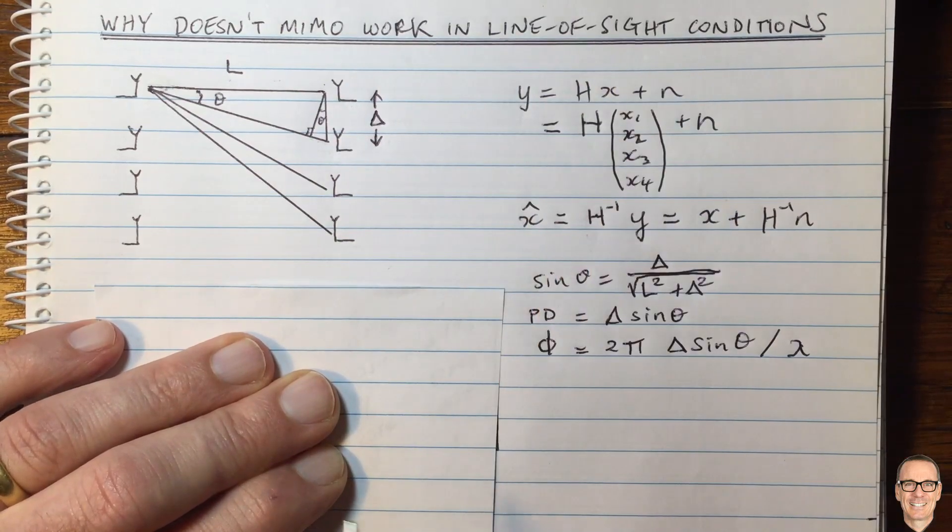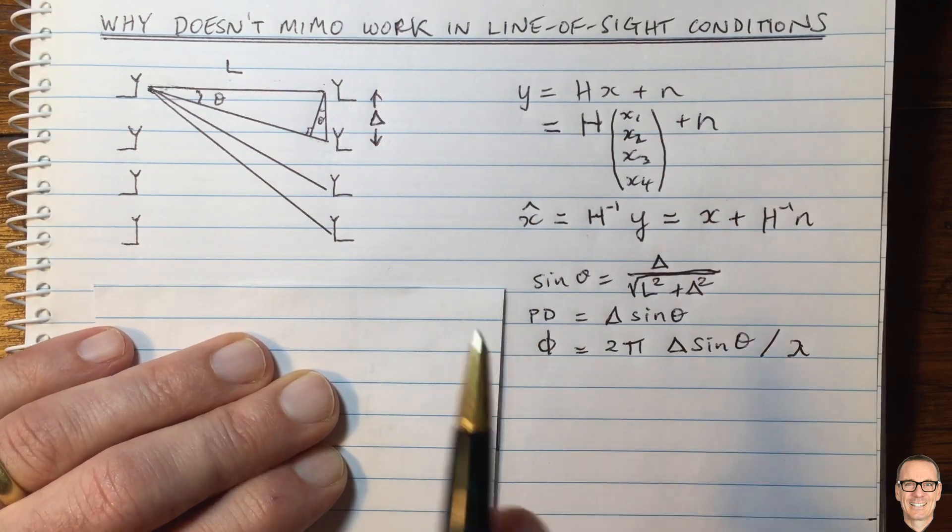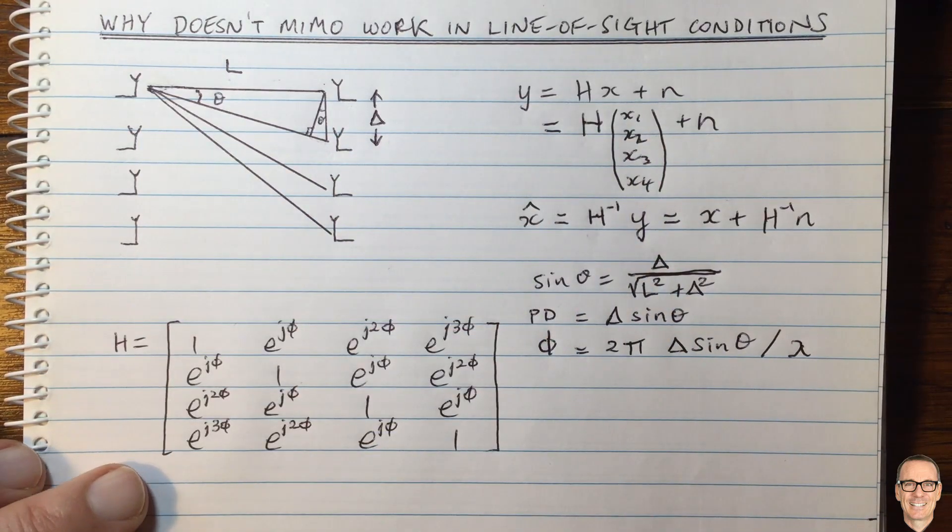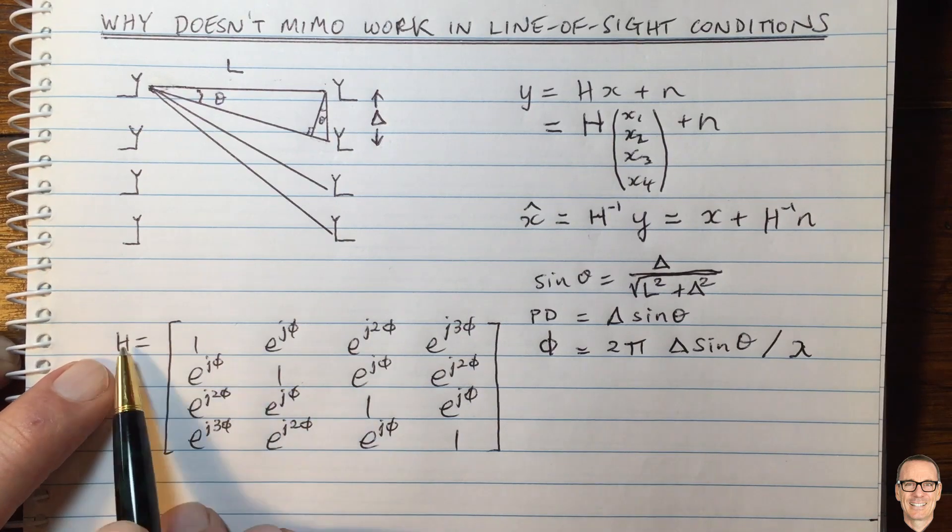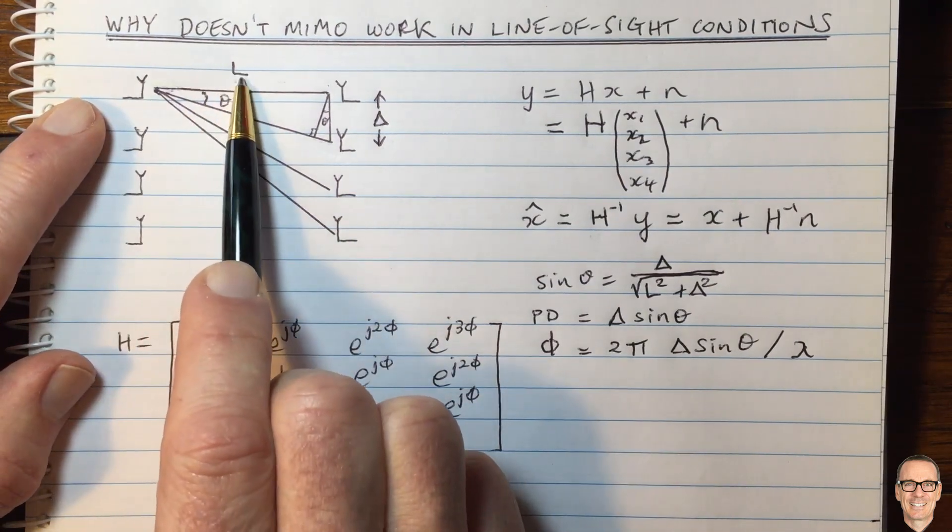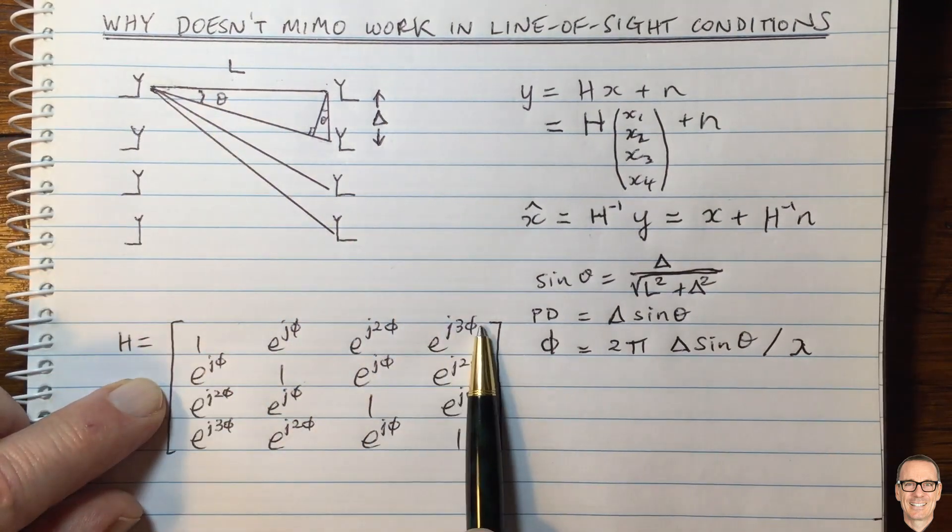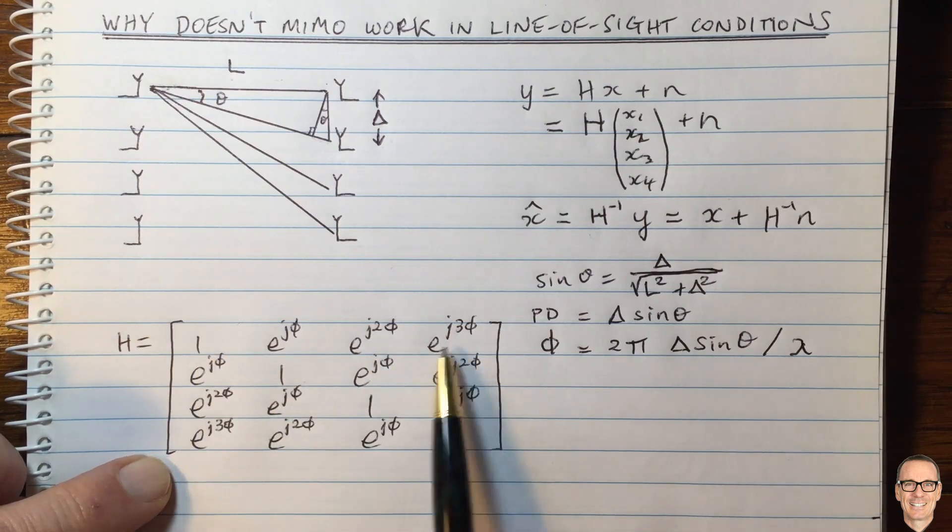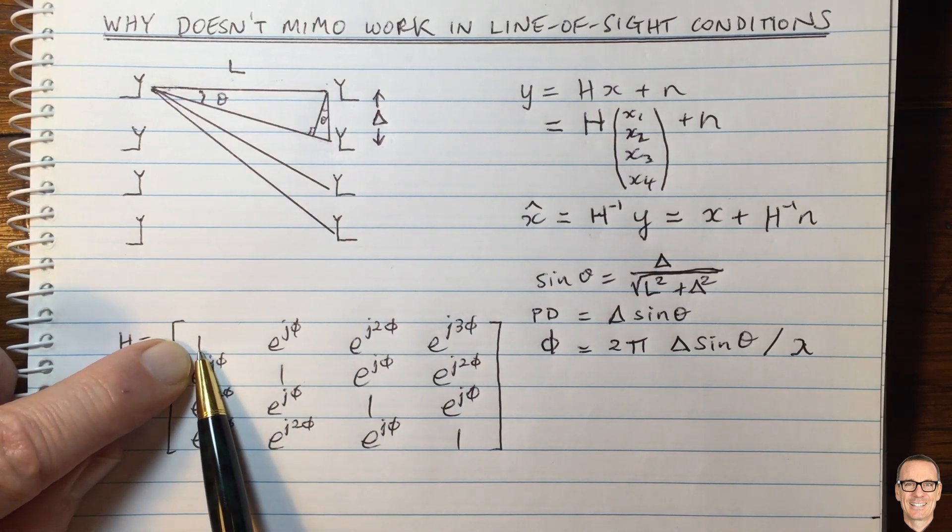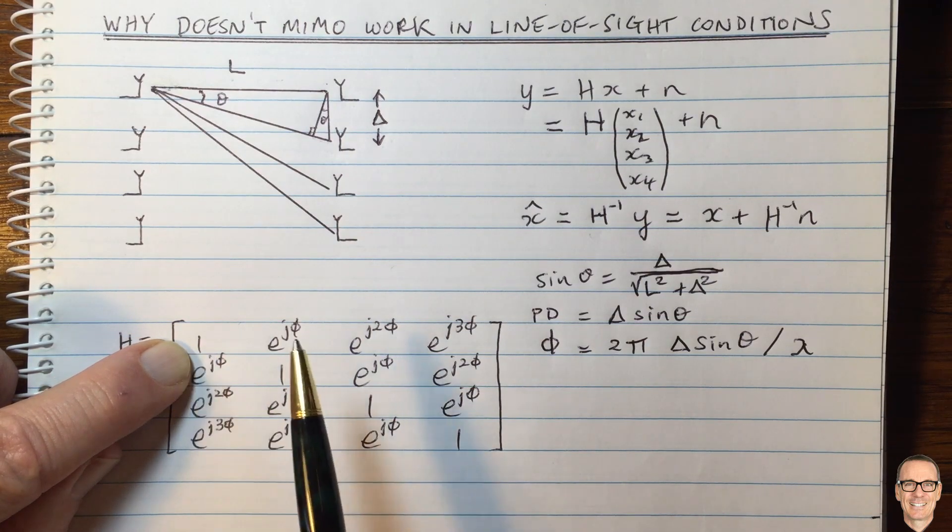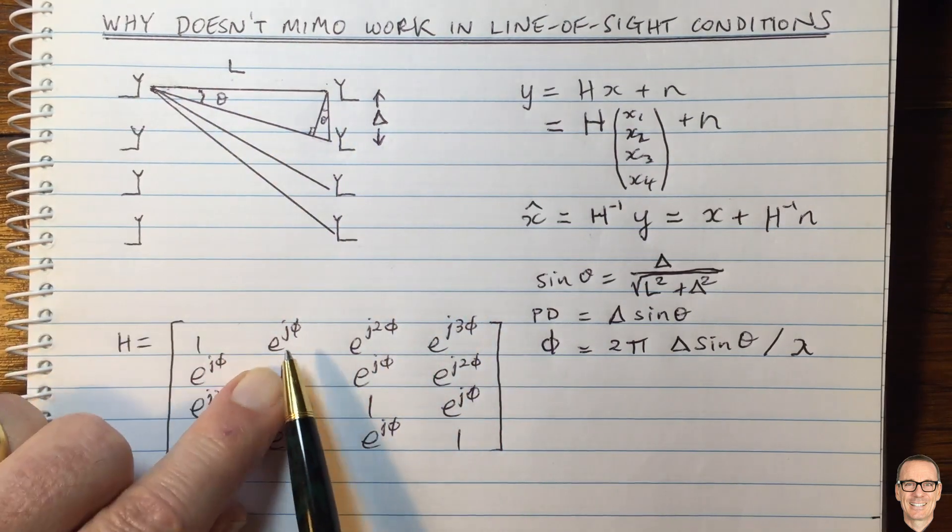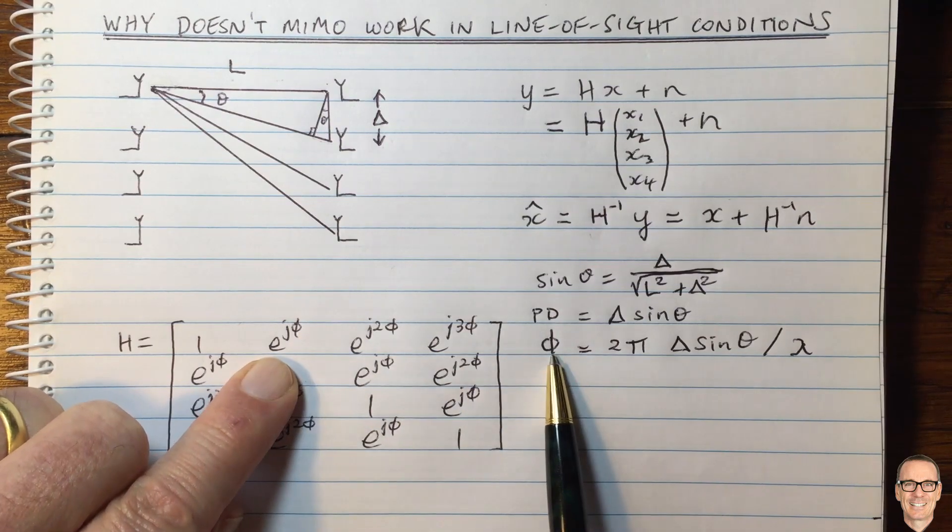Now we've got an expression for the phase difference between the received signal at this antenna and this antenna in the line of sight conditions. This leads us to realize that this matrix H can be written in this form. The matrix H where we've normalized the powers. Because these are a long way away in general, all of them will be having the same magnitude, but they'll be a different phase.